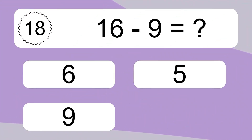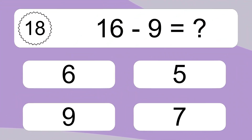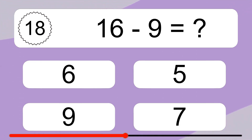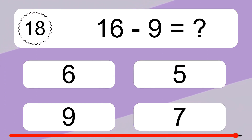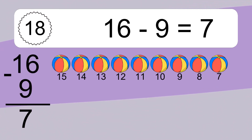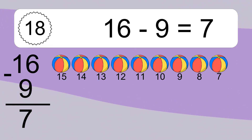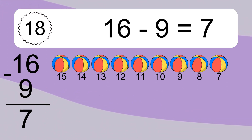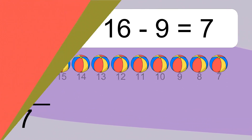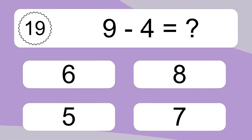16 minus 9 equals what? 16 minus 9 equals 7. Let's count it: 15, 14, 13, 12, 11, 10, 9, 8, 7.